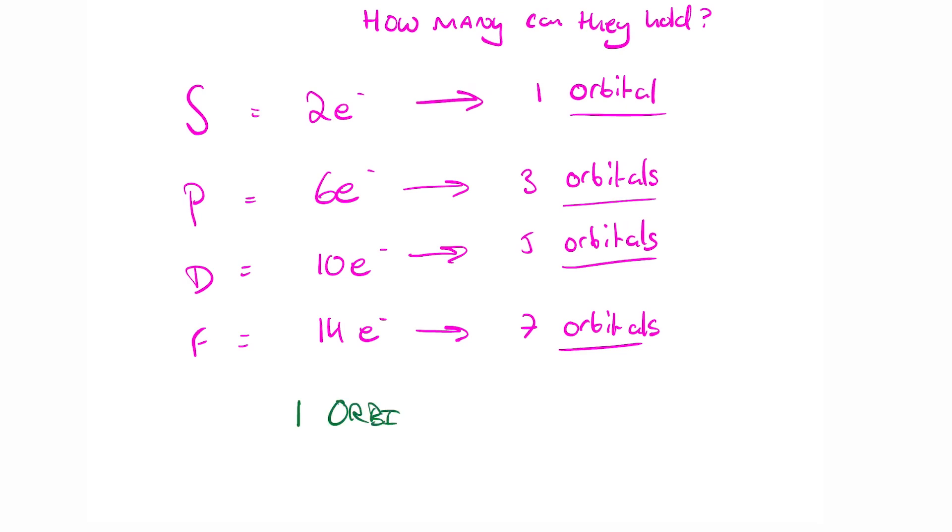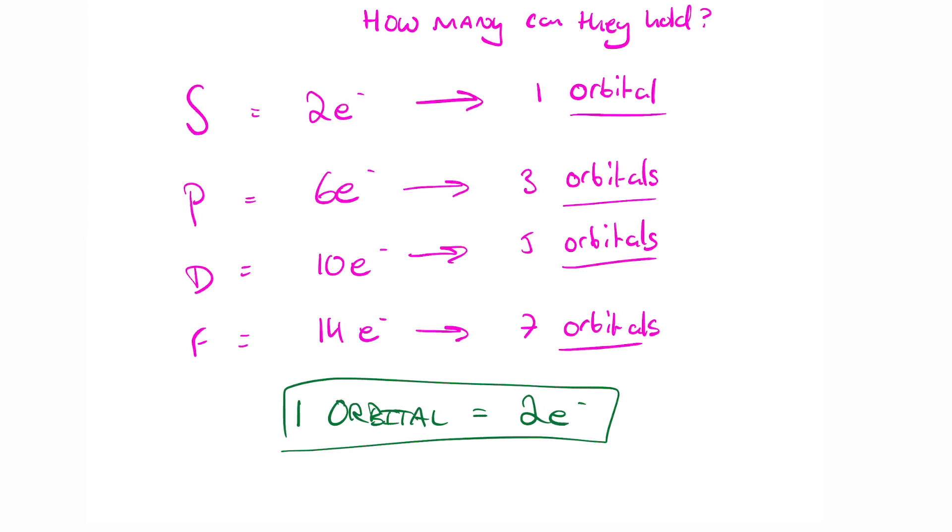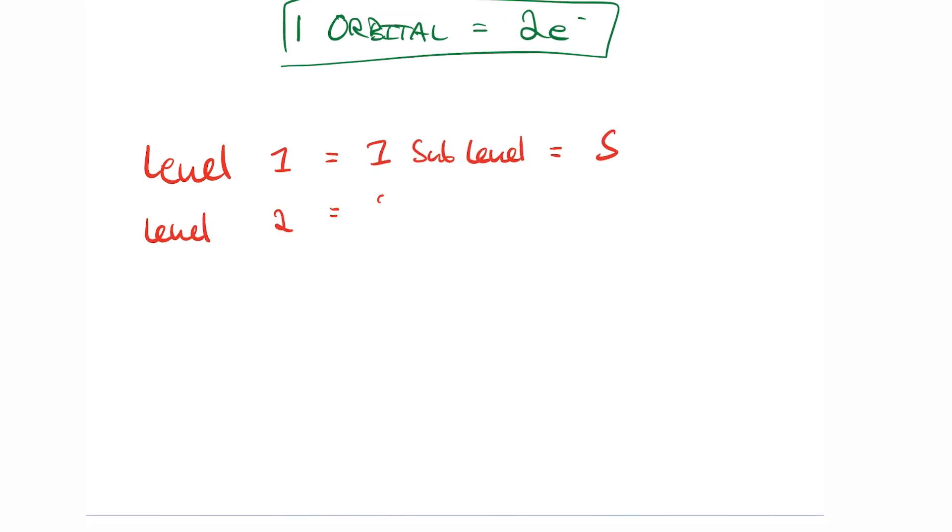You need to know that each orbital can hold two electrons. If you think about what I've just said, S can hold two electrons and therefore has one orbital. P can hold 6 electrons so has 3 orbitals. D can hold 10 so has 5 and F can hold 14 so has 7.